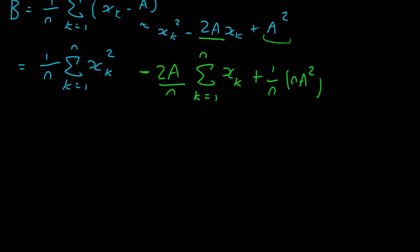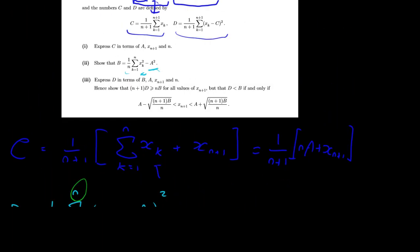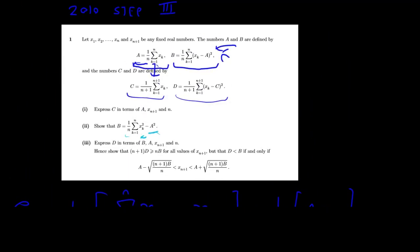And you'll notice that this expression, 1 over n times this, this is just a. So in fact, we have -2a² + a². And over here we just have that, and this equates to -a². So that's it. You know, we get exactly what we wanted in the question. So that'll give us our expression for b.